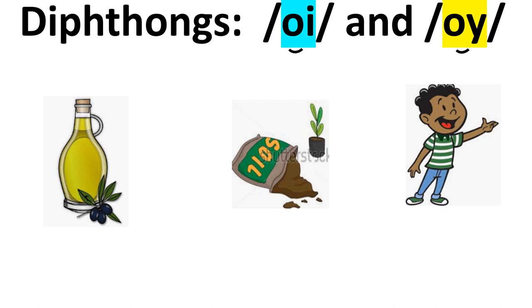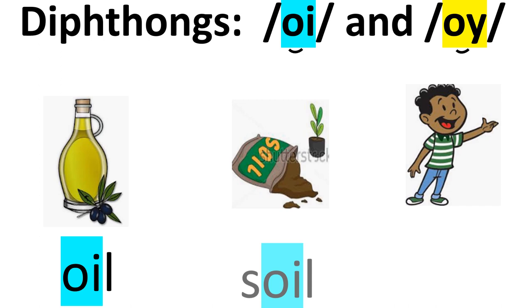Today and every day, remember the vowel combinations OI and OY are diphthongs. To spell the OI sound, use OI in the initial and medial positions, and OY in the final position, as in oil, soil, and boy.